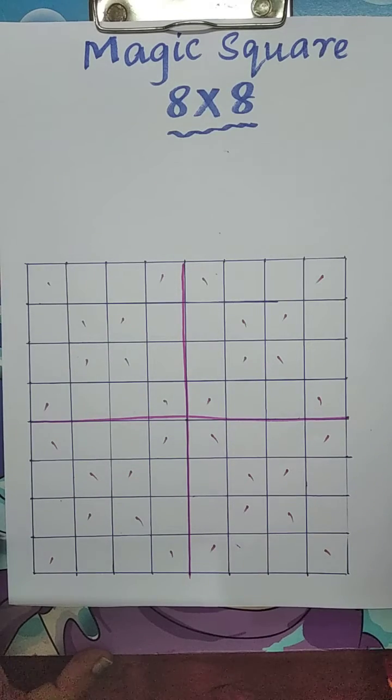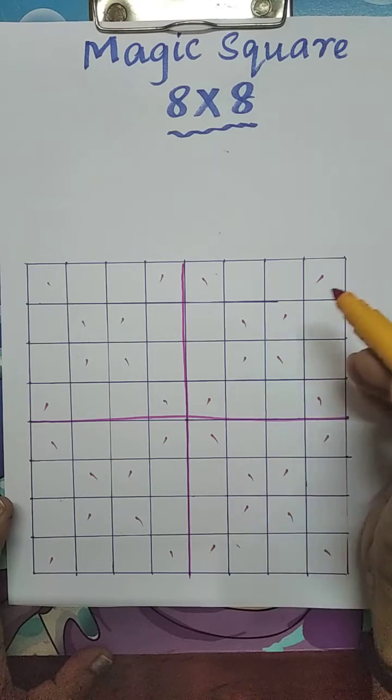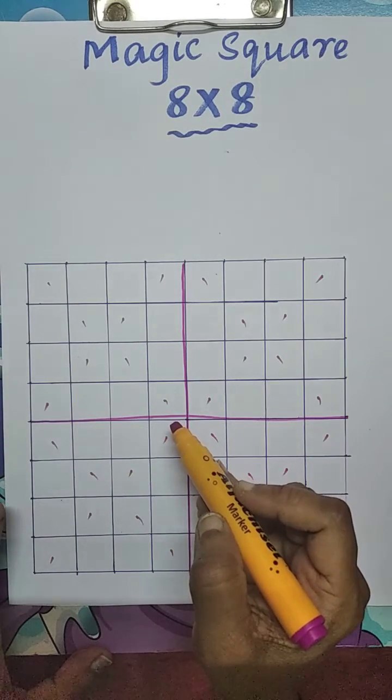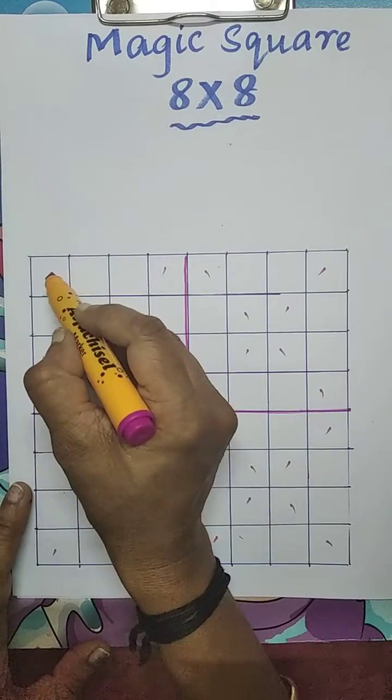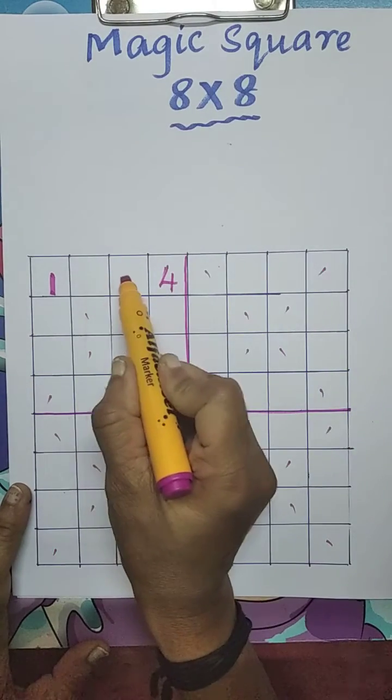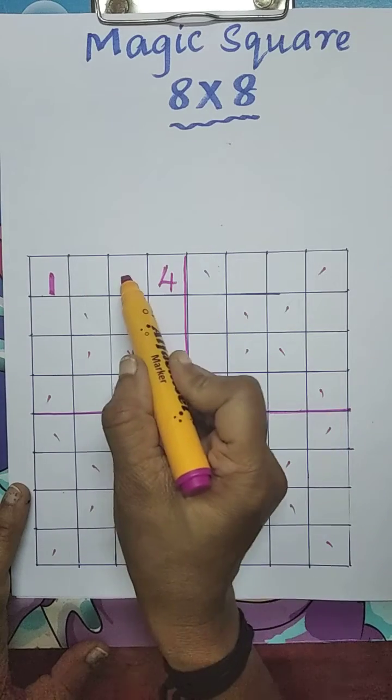Now we have to write the numbers continuously, 1 by 1. But where I marked there we have to enter the numbers. How to write? I will show now. 1, 2, 3, 4. Here I am not marked. They are not diagonals of this square box. So leave this box.